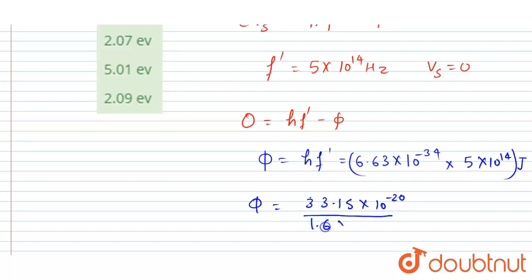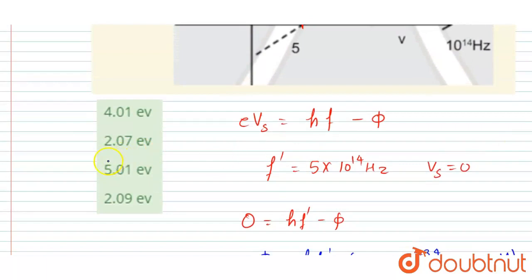So this much will be the work function in electron volt that is equals to 2.07 eV. So now you can see B is the correct option. Simple, thank you.